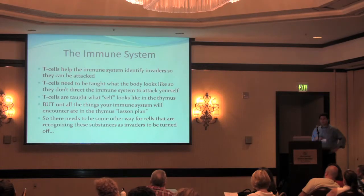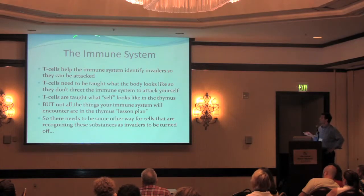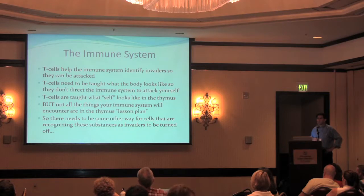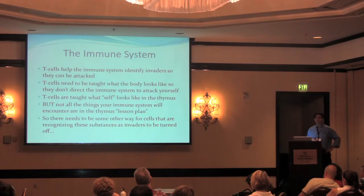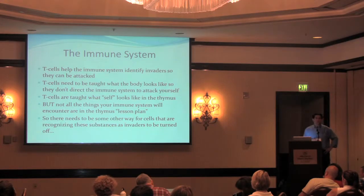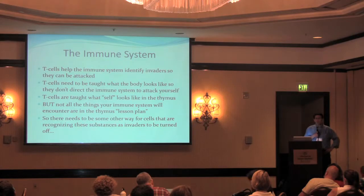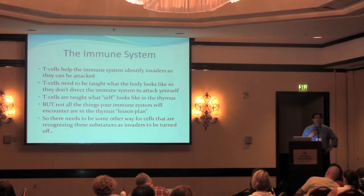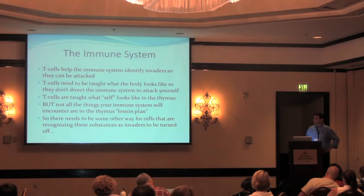White blood cells come in several flavors. One is the eosinophil, and another is a T cell. T cells' job is to identify invaders so the immune system knows what to attack. T cells need to be taught what your own body looks like so they don't attack it. Where they go to school is an organ called the thymus, which sits in your chest right above your heart. That's where they learn: this is your own body, don't attack it; anything else, go get it. Unfortunately, not everything your body will encounter is in the lesson plan — there's no peanut in your thymus. So when T cells get out of the body and you eat a peanut, as far as they're concerned, that's an invader and it needs to be attacked.